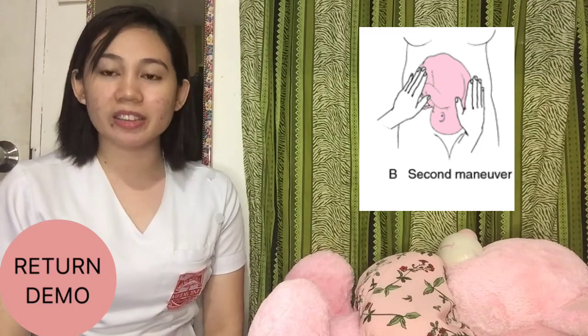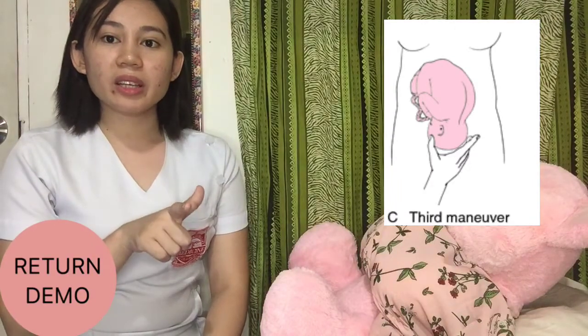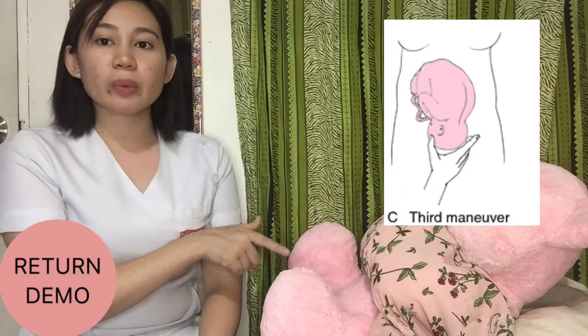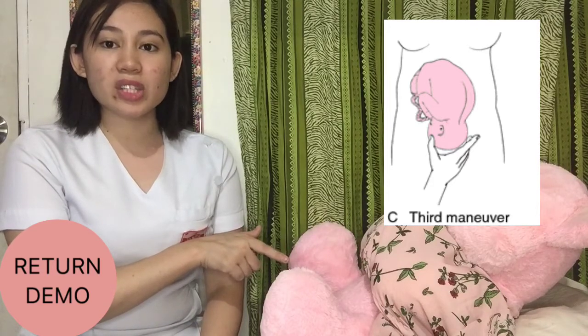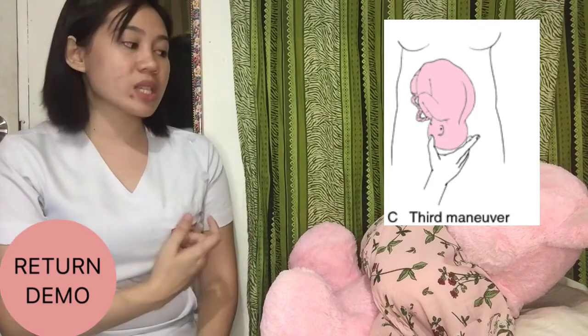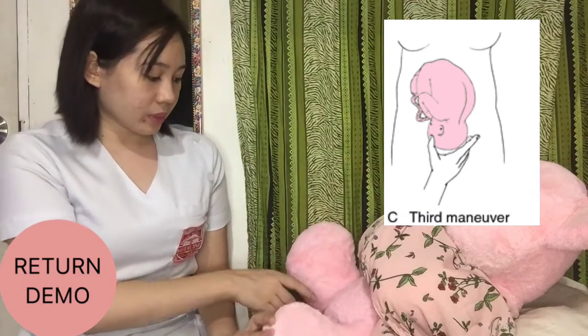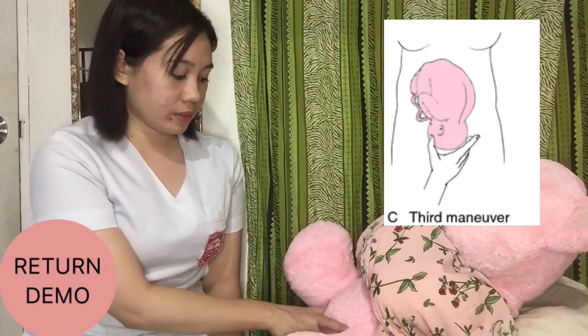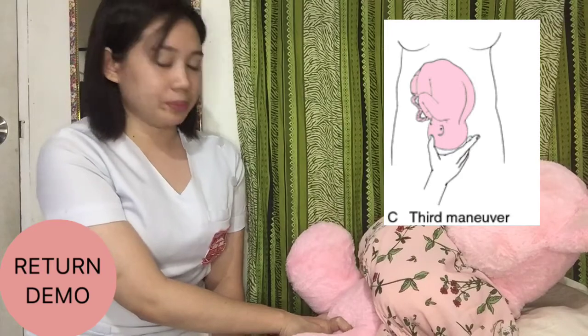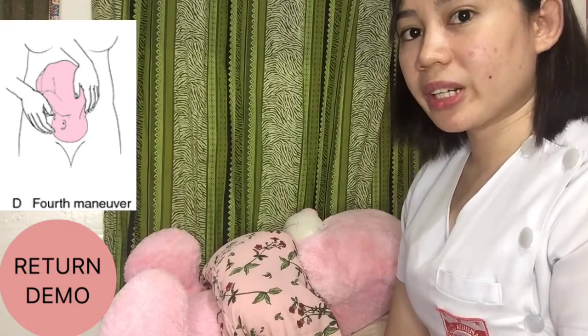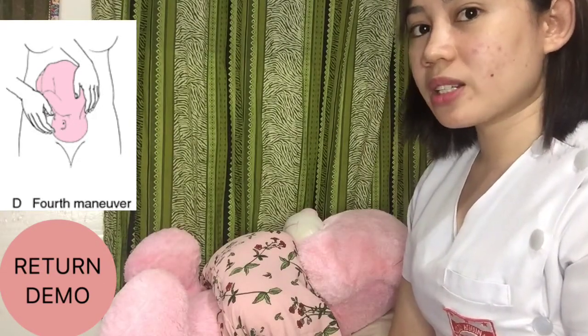The third maneuver is the Pawlik grip. We use our thumb and index finger to identify which part of the fetus is at the inlet and its mobility. We still face the patient while doing this maneuver. The last maneuver is the pelvic grip. Now we position ourselves facing the patient's feet. Here, we try to determine the fetal attitude and the degree of fetal extension in the pelvis.